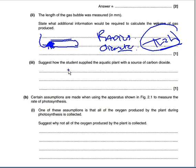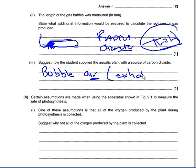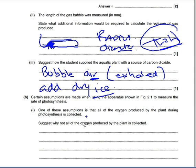Suggest how the student supplied the aquatic plant with a source of carbon dioxide. You can be creative here. One method: get a straw and blow exhaled air into the water. Another method - if I'm being bonkers - add dry ice. Dry ice is solid carbon dioxide. Yes, you'd be freezing your plant, but the question only asks you to suggest a method for providing CO₂ - it doesn't say the plant has to survive afterwards! So you can get away with that.